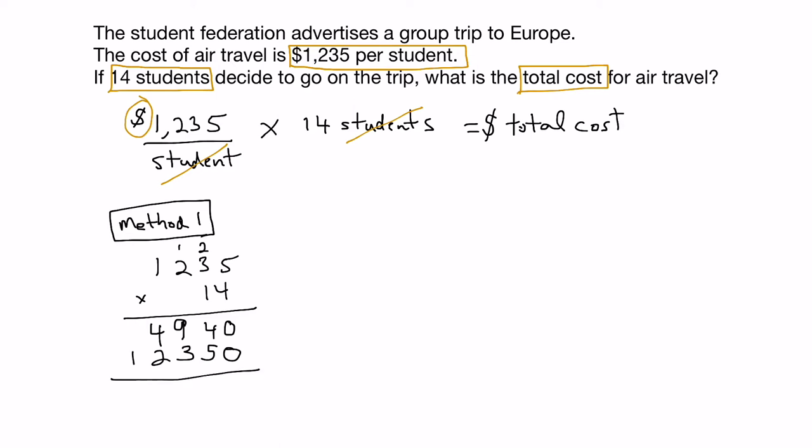And the last thing to do is then to add up our multiplication rows here. So what would we get? 0 plus 0 is 0. 5 plus 4 is 9. 9 plus 3 is 12, carry the 1. 4 plus 2 is 6, plus the carry 1 is 7. And we're just left with 1 in the final column. And in North America, what we do is we usually put a comma after every three digits. And so our total cost, to answer the question, would be $17,290.